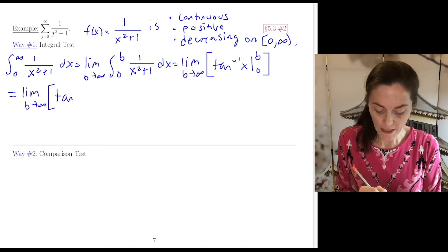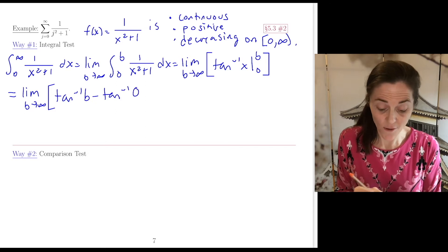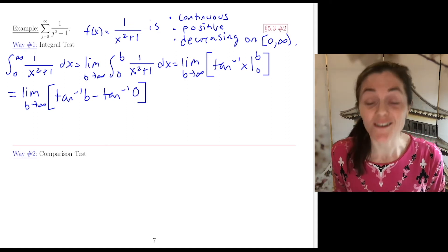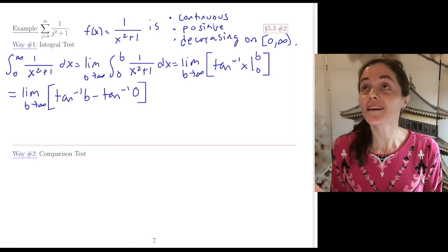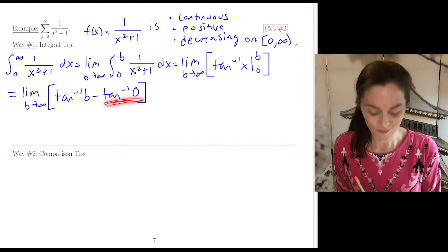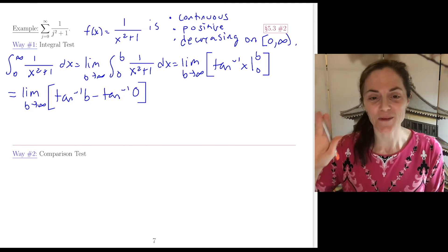We have tan⁻¹(b) - tan⁻¹(0). Tan inverse of 0 is 0; it asks what angle has tangent equal to 0. This is 0, the angle between -π/2 and π/2.